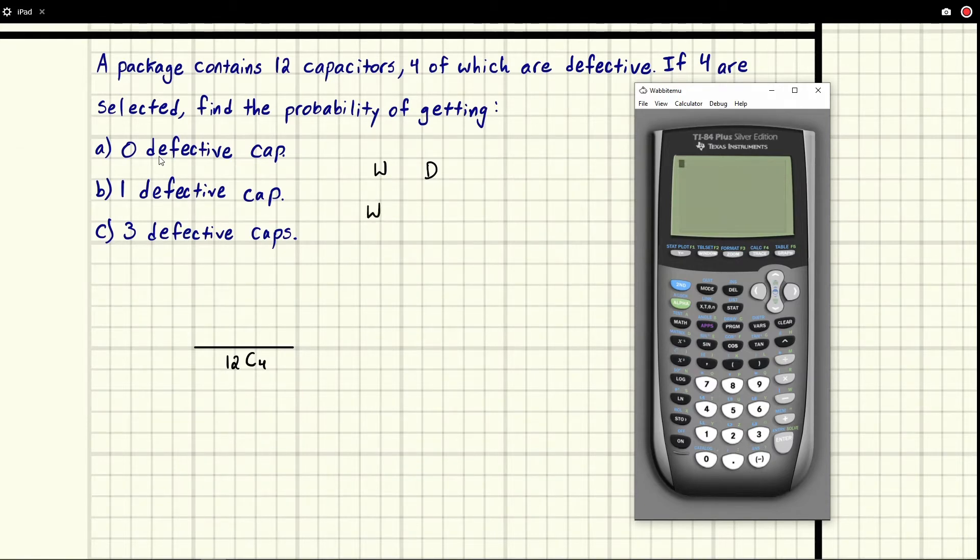Let's say that working is W and defective is D. Let's draw out a scenario and ask, does this change anything? So let's say you get working, working, working, defective. Or you get defective, working, working, working. Are these different in any way? Does the order matter? No, because all we're concerned about is the total number of defective capacitors that we're getting. So in this case, it doesn't matter, which is why we can tell it should be a C and not a P for permutation down there in the bottom.